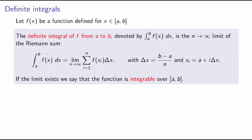A few remarks. First, a bit of notation. The thing inside the integral sign, f of x, we call the integrand. And a and b, the two numbers, we call the limits of integration. The lower one is the lower limit, and the upper one is the upper limit.